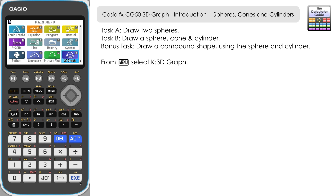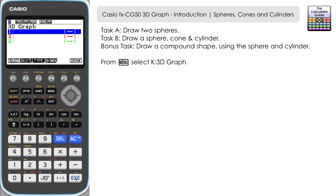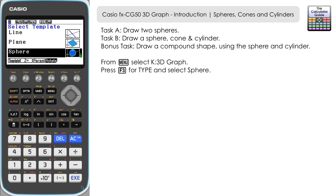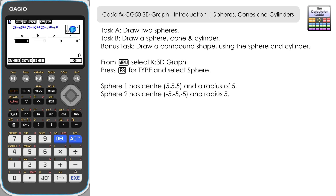If you come all the way down to option K, 3D graph, you can see we've got three entry points — a blue, a red and a green as the default colors. I'm going to use entry 1 to input the equation for the sphere. If you press F3 for type, we can select what type of 3D graph we're going to draw. Navigate down to sphere and press execute.